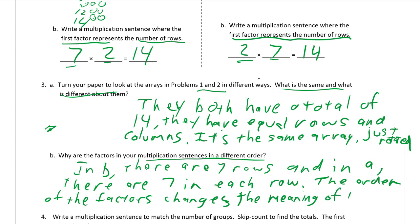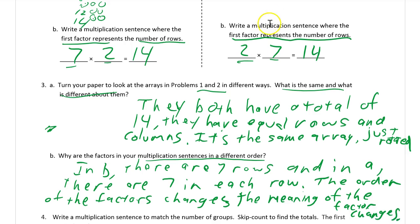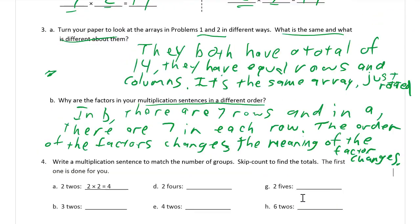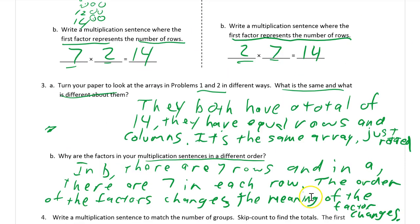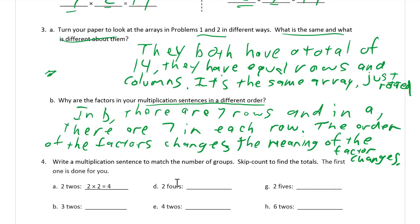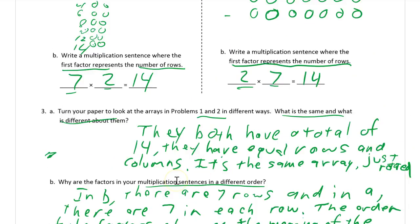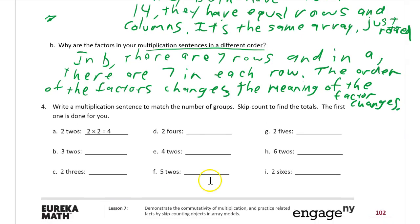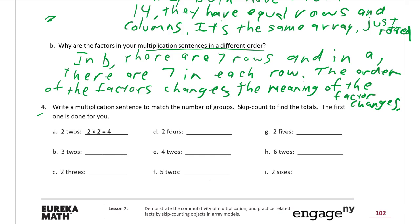The meaning of the factor changes — and that's the key for problem B. You could say the same thing about two: in problem B there are two rows, and in problem A there are two in each row. That's what matters — the order of the factors changes because the meaning of the factors changes.